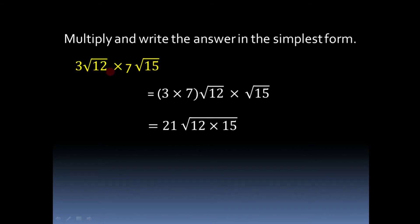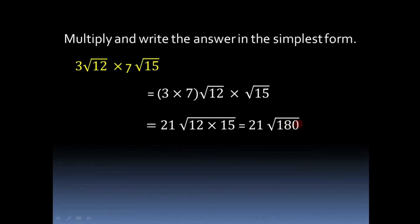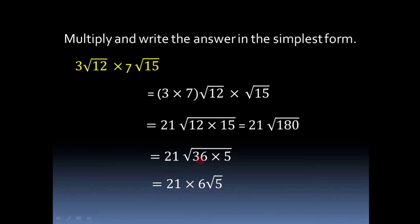The next problem is 3 root 12 into 7 root 15. Here along with the surds we have two numbers 3 and 7. So we multiply 3 into 7 into root 12 into root 15. 3 into 7 is 21, and as these two surds have equal orders we multiply the radicands: 12 into 15 is 180. So we have 21 into root 180. To write in simplest form, we split 180 as 36 into 5. Taking 36 outside the root, its square root is 6. So 21 into 6 is 126, giving us 126 root 5 as the simplest form.